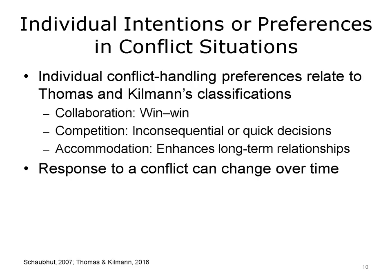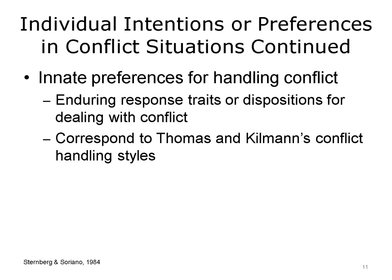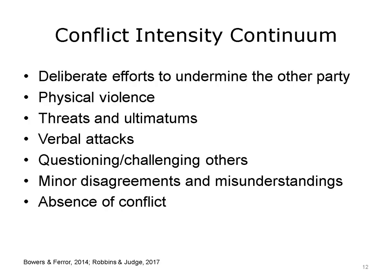Research reveals that individuals have certain innate preferences for handling conflict that correspond to Thomas and Kilman's styles. Sternberg and Soriano suggest it may be more fitting to think of the five styles as relatively enduring conflict response traits or preferences, rather than alternative choice behaviors. When faced with a conflict, some people prefer to win, others will be obliging, others will want to ignore it, others will compromise, and yet others will seek the most favorable result for all. Importantly, not all conflicts are equal in intensity, and the power differential between individuals plays directly into that intensity.